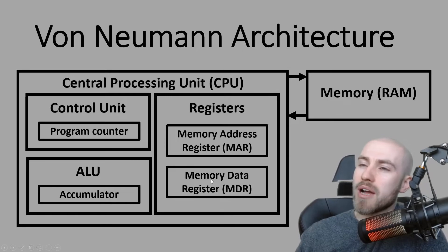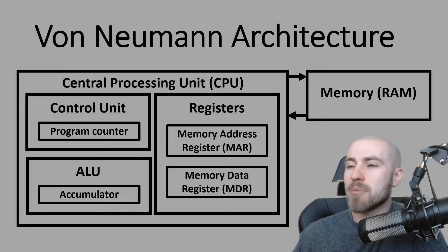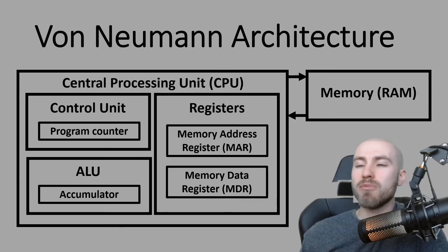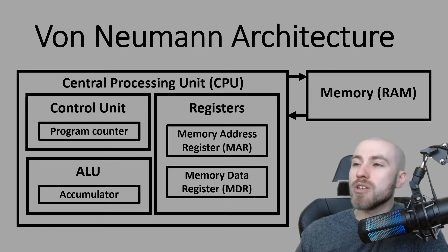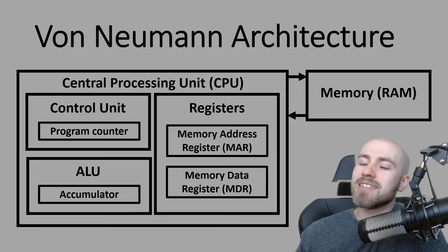Now at that point, going back to what the control unit does, it will actually decode that instruction and find out what it is that needs to happen. So it might be that it needs to perform a calculation, or it might be that it needs to move somewhere else in memory, and the control unit will make that happen. That's the execution part of it. If it was a calculation, the ALU or the arithmetic logic unit will carry out that calculation and then temporarily store it in the accumulator.